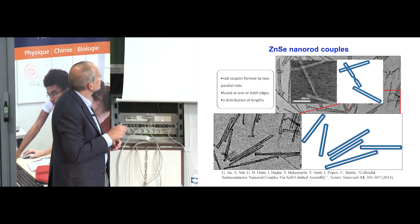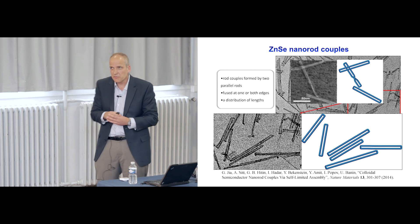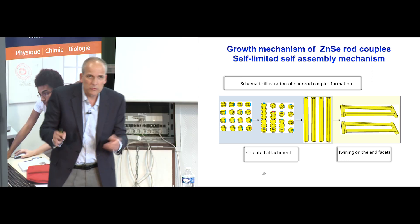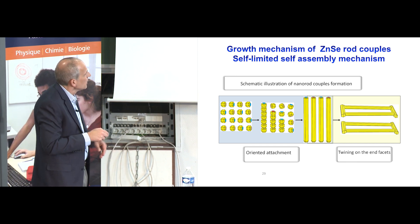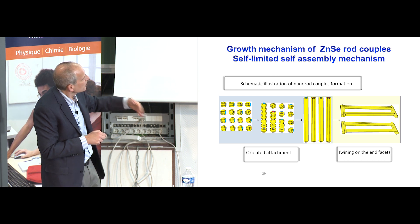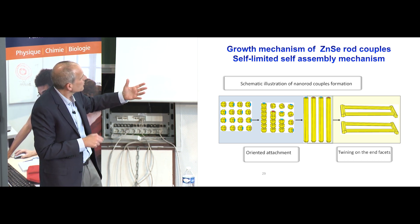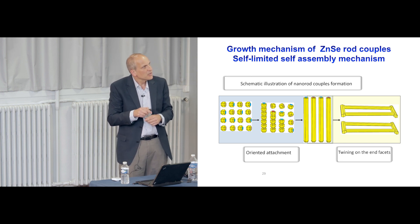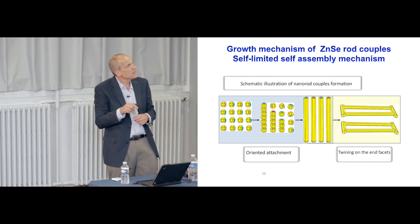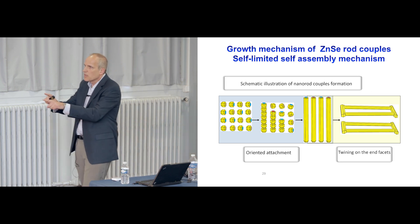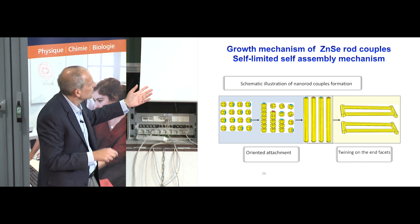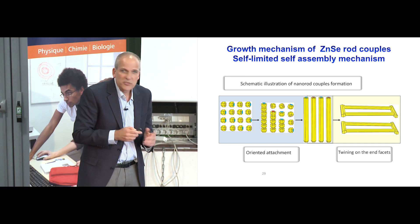This system actually grows quite interestingly with a mechanism that we termed as self-limited self-assembly. It starts off with an oriented attachment process providing zinc selenide nanowires, which is well known in solution that you can get nanowires with oriented attachment. But in a second phase of the reaction, when we heat it up to a second phase, actually the nanowires shorten by a ripening effect. And furthermore, they come together. And because of the higher reactivity of the end facets, tend to grow this twin end facet combination or connection, which actually then terminates the growth. And this is the origin of this self-limiting process. So they come together for a short time. The edges grow, and then this kind of growth ceases. So here we have two rods together.